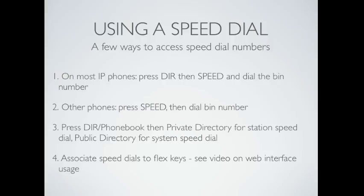To access speed dial, there are a few different ways. On most of the IP phones, you'll press the Directory soft key, then Speed, and you can just dial the bin number. So if the first one was 00, you dial 00 and it goes to that number.